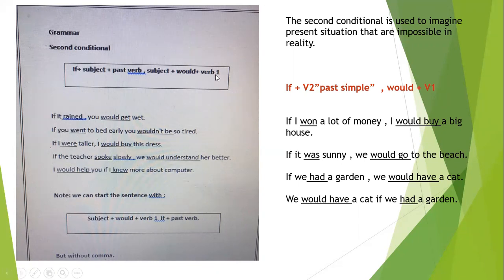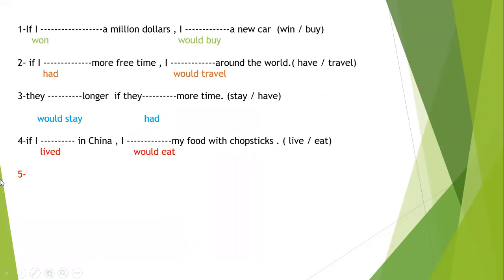'I would help you if we knew more about computers.' We can start with 'would + verb one' and the second part with 'if + verb two'. Now look at the exercise: 'If I had a million dollars, I would buy a car.' We have two spaces — with 'if' we put verb two, so 'had', and with the second part 'would + verb one', so 'would buy a new car.'